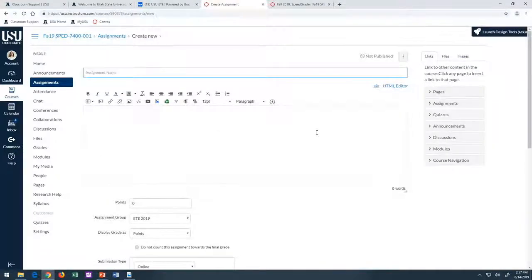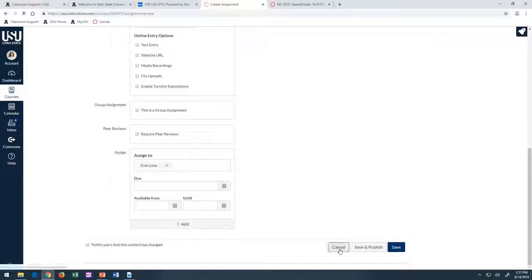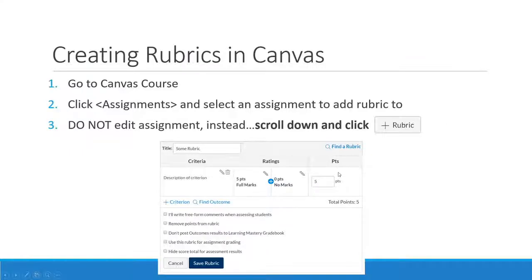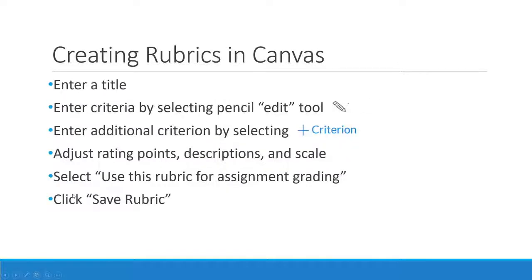Instead of editing in the actual assignment, you'll go down to a create rubric button — an 'add rubric' button. Then this template will pop up to fill in. You'll enter your title, just like on that Word document or PDF form that Eloisa presented. You'll enter the criteria by clicking the edit tool, just as with everything else in Canvas.